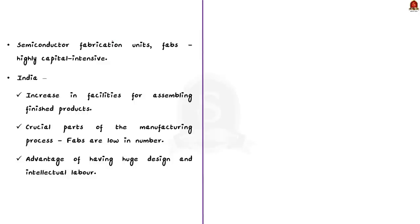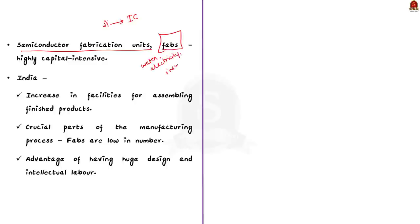Coming back to the news article: semiconductor fabrication units, also known as fabs, turn raw material like silicon into integrated circuits which can be used in electronic hardware. Setting up these fabs requires a highly reliable and high-quality supply of water, electricity, and insulation from elements. Insulation means the act of covering something to stop heat, sound, or electricity from escaping or entering. So fabs are highly capital intensive.